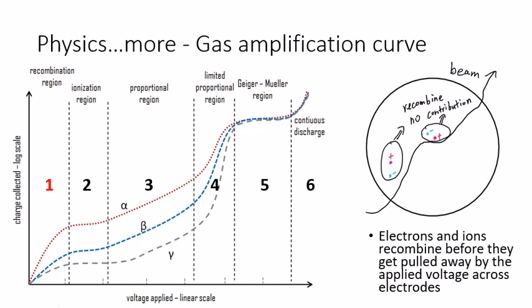This is essentially what happens in region 1, and we call this region the recombination region. The recombination region is no use for clinical dose measurement because of its instability.